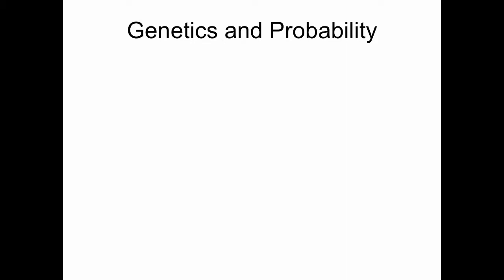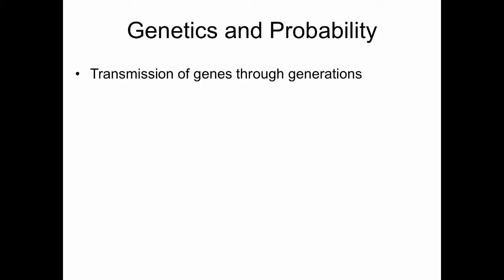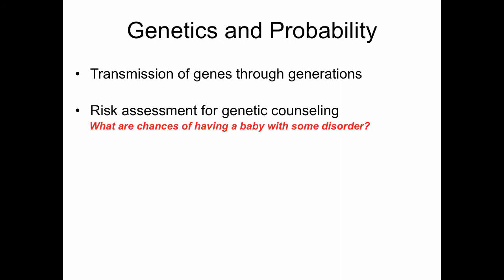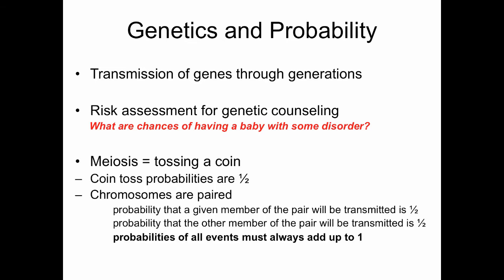Let's take a few minutes and talk about genetics and probability. We think about this in relation to transmission of genes through generations, and this is important for risk assessment and genetic counseling because you could clearly have patients that might want to talk to you about the chances of having a baby with some disorder, especially if they've already had one child with a genetic disorder. If you think about meiosis, meiosis is like tossing a coin, and when you toss a coin the probability is one-half that you're going to get either heads or tails.